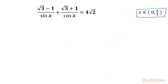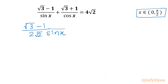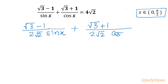Let's get started by dividing both sides by 2√2. So I will be rewriting our equation as (√3 − 1)/(2√2 · sin x) plus (√3 + 1)/(2√2 · cos x), and the right-hand side becomes 4√2 / (2√2), which equals 2.